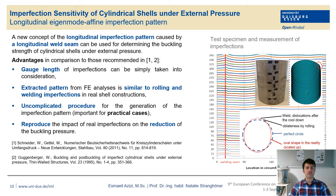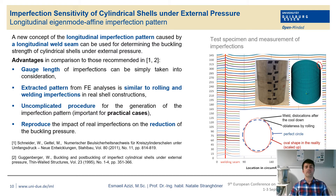Let's focus on the longitudinal eigenmode-affine imperfection pattern. This pattern was used in the past by other researchers in their numerical analyses. We have another idea of how to provide this imperfection pattern, which is much more advanced than those recommended in the literature. The advantage of this new longitudinal imperfection pattern is that we can consider the gauge length of imperfection very easily and then extract the pattern from FE analysis, similar to rolling and welding imperfections. The buckling strength of a perfect cylindrical shell can be reduced by as much as we have this reduction in real shell constructions.